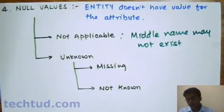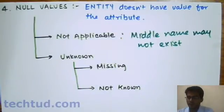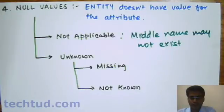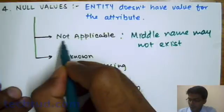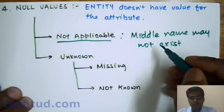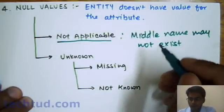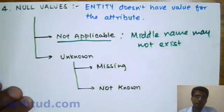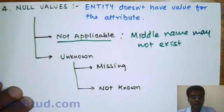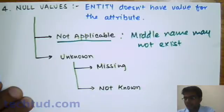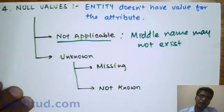We have another type of attribute: null values. Null values arise when the attribute does not have anything to store. The first case is 'not applicable' — sometimes we do not have any value, or the attribute itself is not applicable for some particular entity. For example, if I do not have any middle name, the middle name column will have a null value.